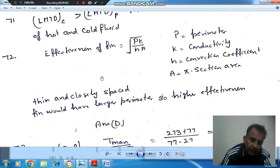For higher P, the fin should be thin and closely spaced to have higher perimeter. Then the effectiveness will be higher.